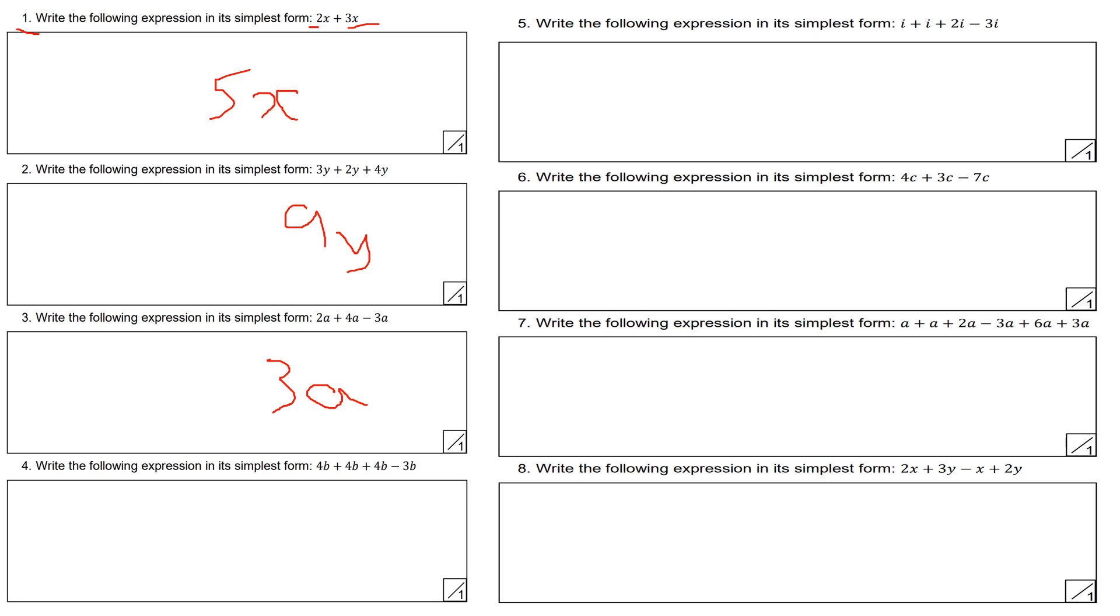Question number 4, collect like terms and write it in simplest form: 4b plus 4b plus 4b minus 3b. That'll be 12b, since 4 plus 4 plus 4 is 12, then minus 3b gives 9b.